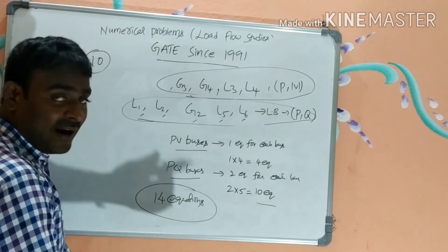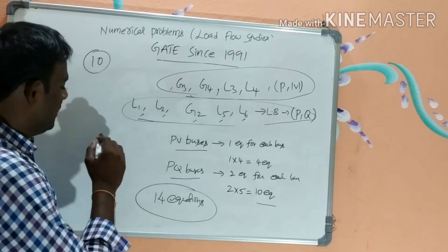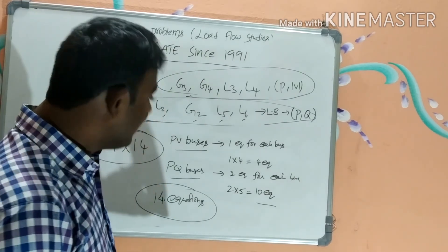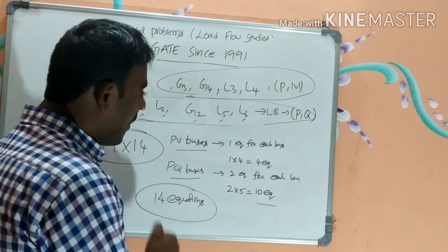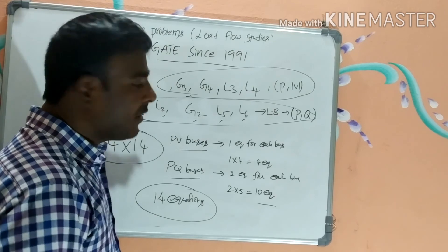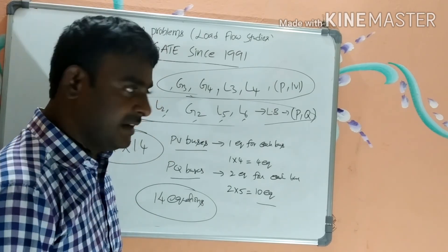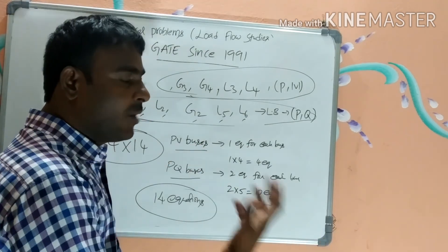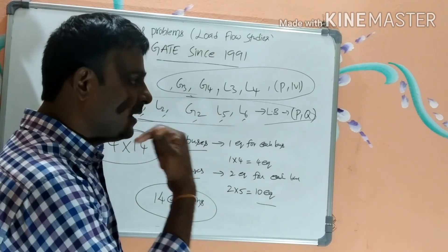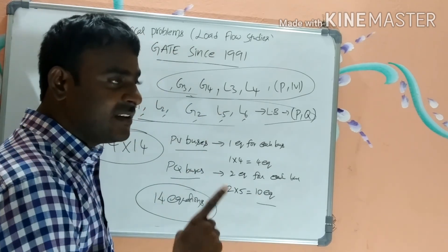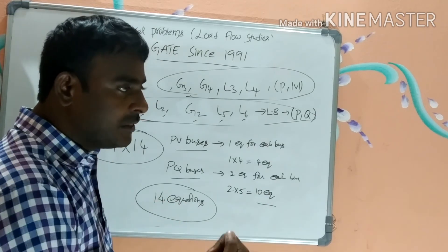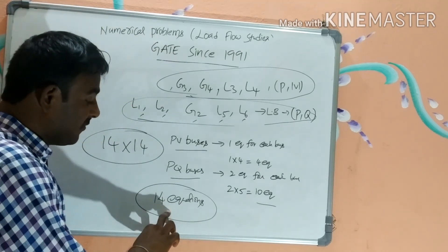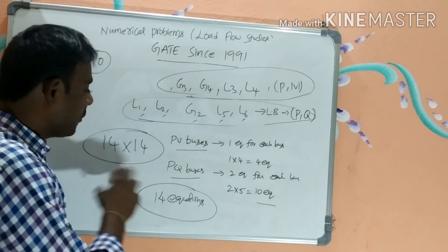If the same problem asks for the Jacobian matrix order, the answer is 14×14. By understanding bus types — PQ buses require 2 equations each and PV buses require 1 equation each — we can solve all Newton-Raphson method questions on equations and Jacobian matrix order.